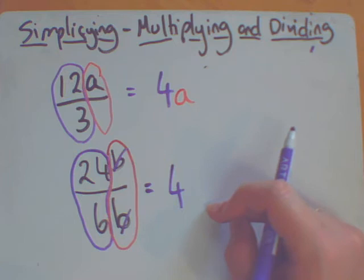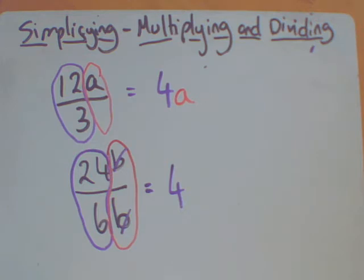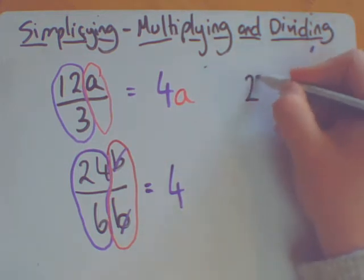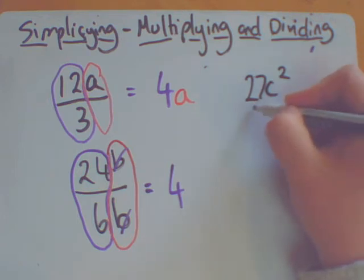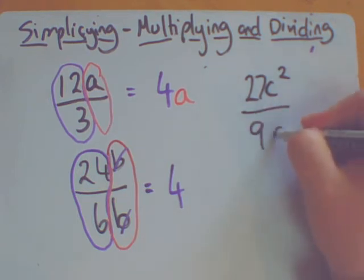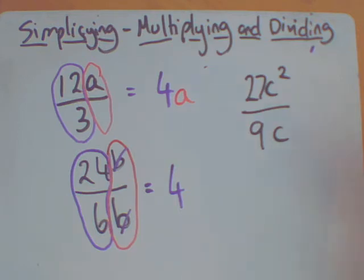Try one more. Let's go for 27c squared divided by 9c. Again, do the numbers, then do the letters.